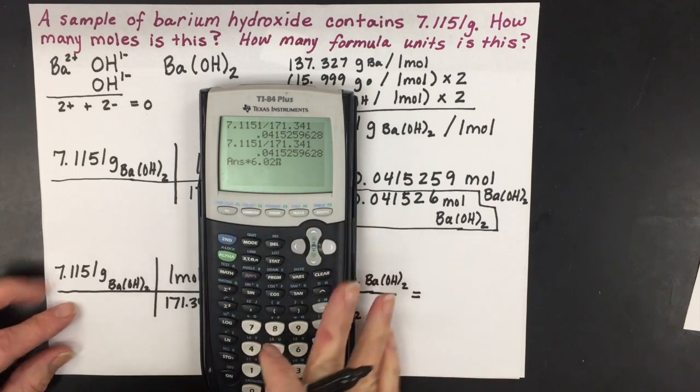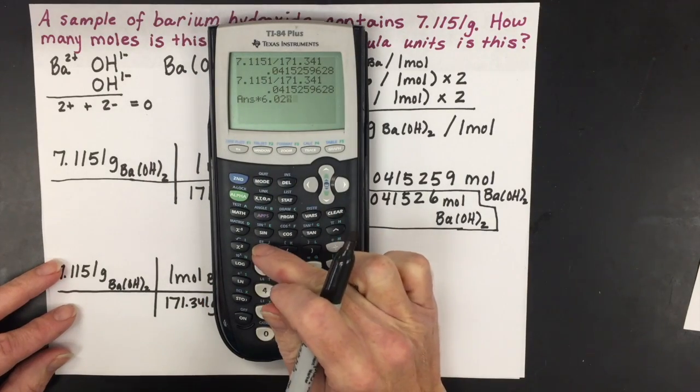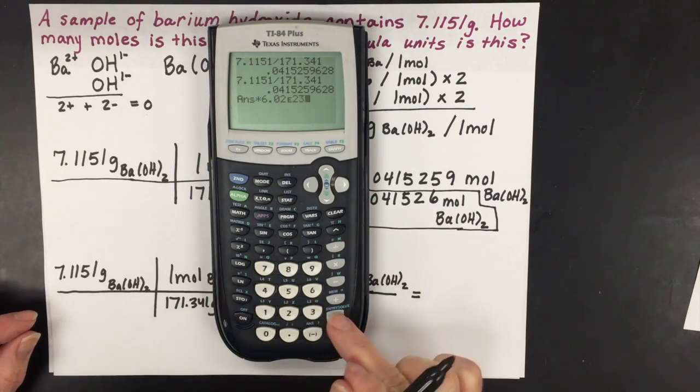You have to use that second comma, so you get that EE key, and then you put 23.